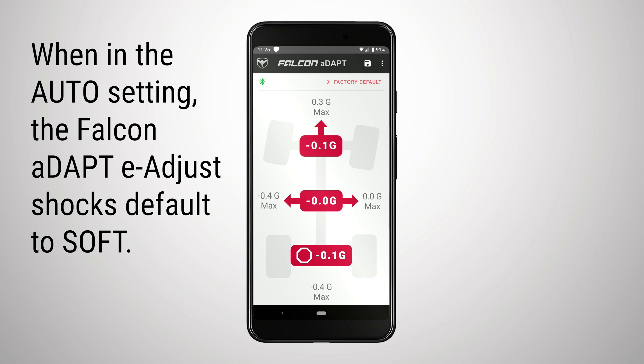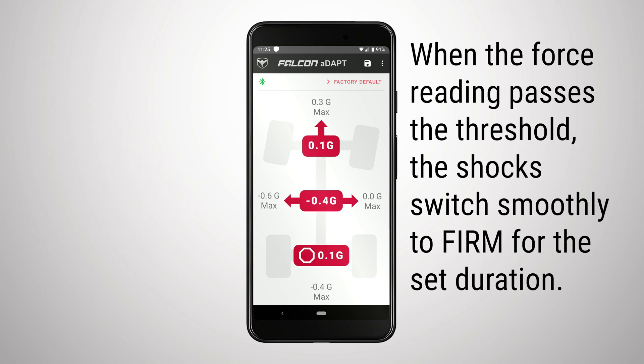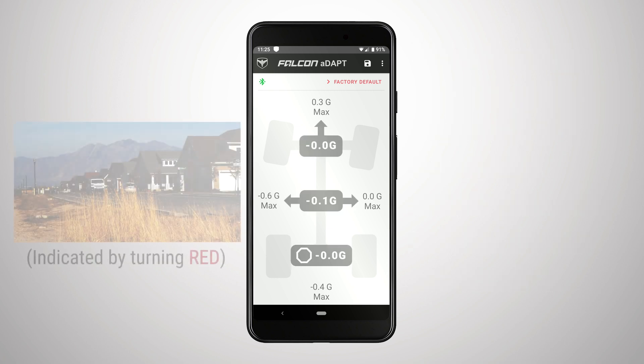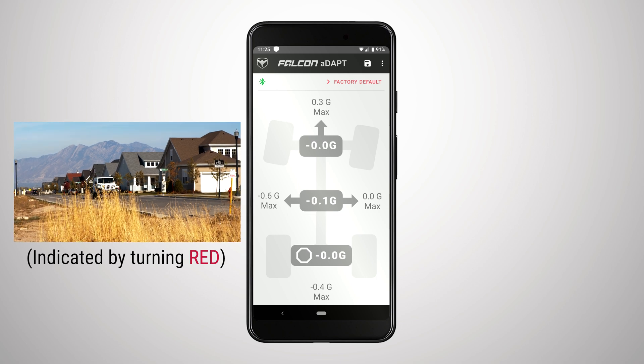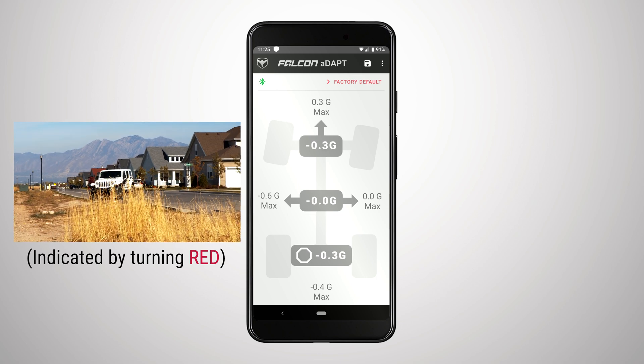When in the auto setting, the Falcon ADAPT eAdjust shocks default to soft. When the g-force reading passes the force threshold, all the shocks switch smoothly to the firm setting for the set duration. The app indicates this change by switching the zone graphics from grey to red.